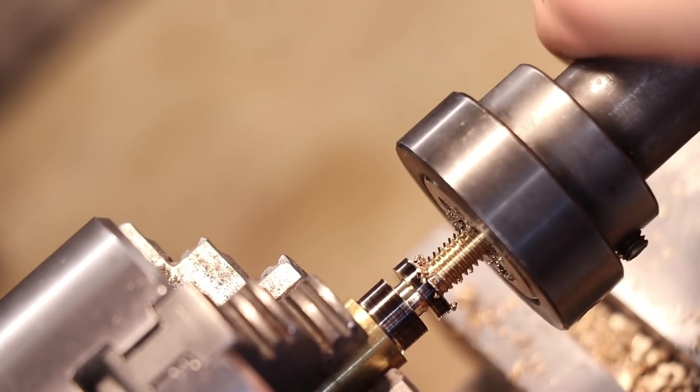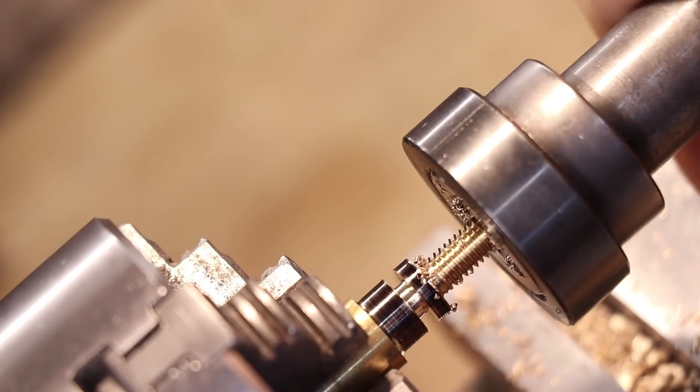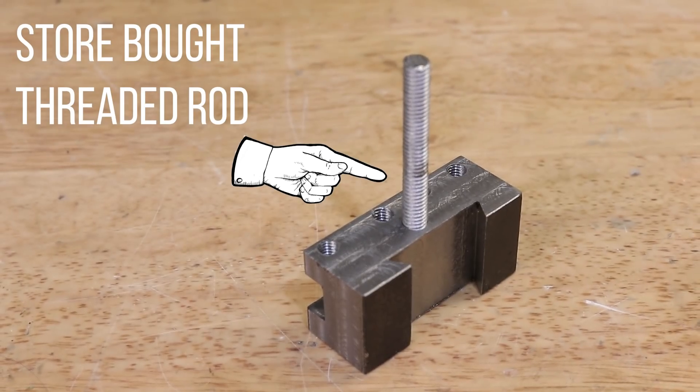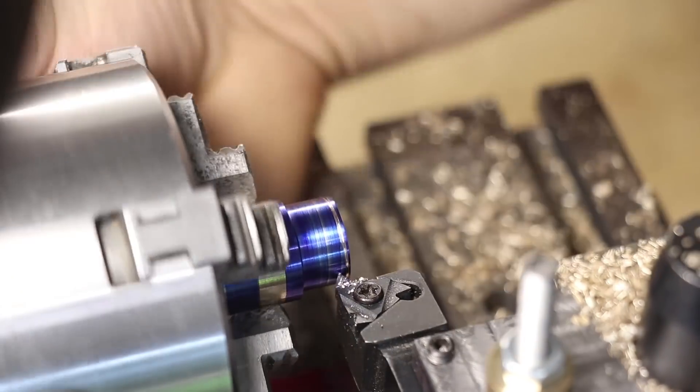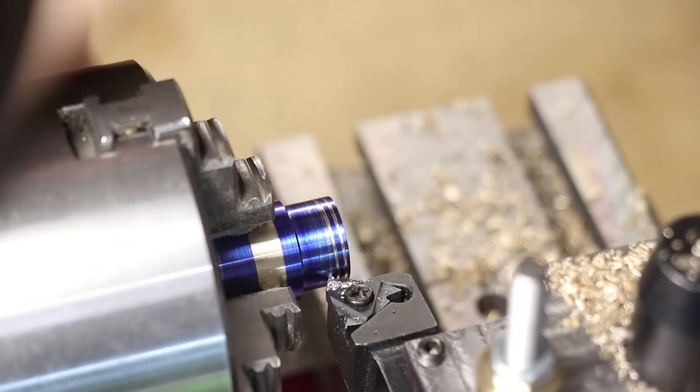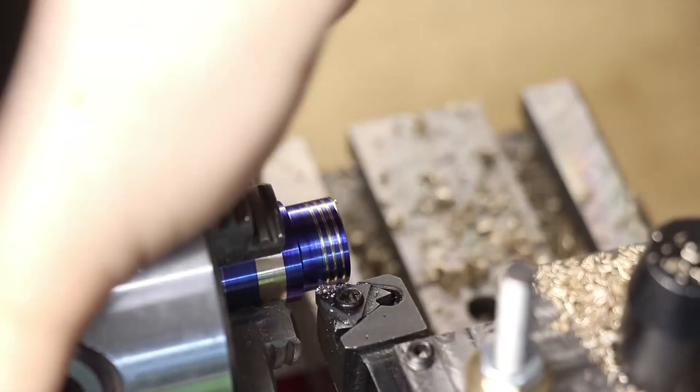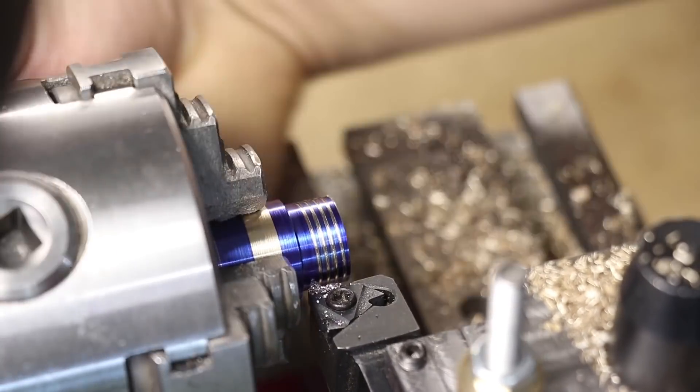It's just when I need threads cut, I'll try and use a store-bought bolt or I'll use a thread cutting die. To me, it's just faster and easier. Of course though, there is the occasional thread that needs to be cut with the lathe. Generally, it's a non-standard thread or one that's less common.